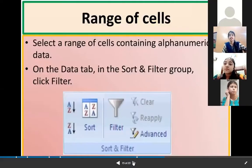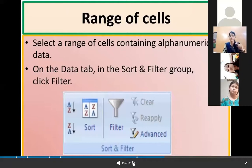Then, range of cells: select a range of cells containing alphanumeric data. On the Data tab in the Sort and Filter group, you can select the range. You can select all the entire cells, and then there is an option on your screen, Sort and Filter group.